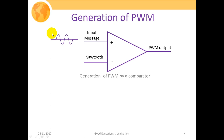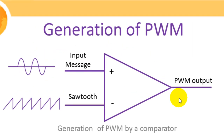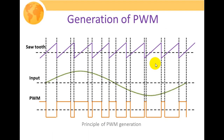We apply our message signal at the non-inverting terminal, whereas at the inverting terminal we apply a sawtooth waveform as the carrier pulse, and at the output we get the PWM signal. The inputs to the comparator are the message signal and a sawtooth waveform operating at the carrier frequency. One condition must be noted: the peak value of the input signal should be less than the peak value of the sawtooth waveform for this method to be applicable.